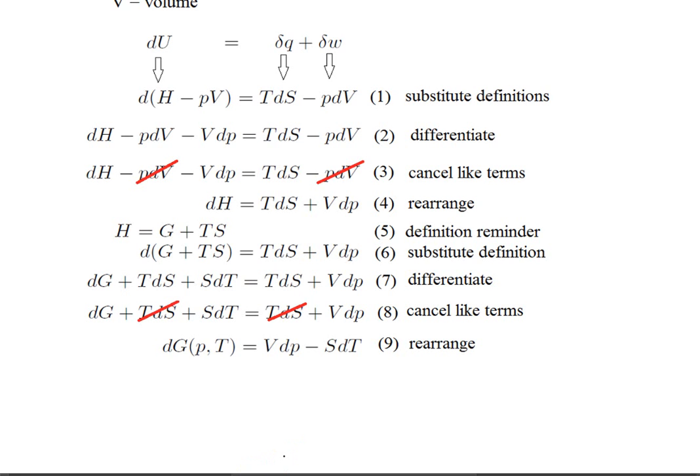In line nine, we rearrange what's left and get an expression for Gibbs energy in terms of pressure and temperature. Clausius' goal was to relate pressure and temperature, and we're getting there. We've just done a Legendre transform to create Gibbs energy from the first law. It takes about three weeks at MIT to get this far.